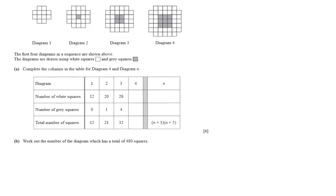That's term one, term two, three, and four. You have some white squares and then some gray squares in the middle. The diagrams are drawn using white squares and gray squares, like I just said.